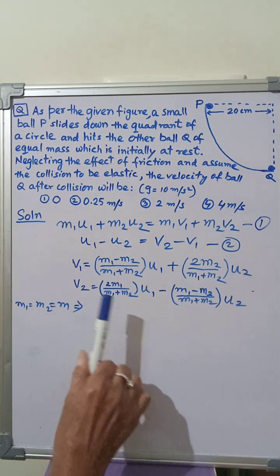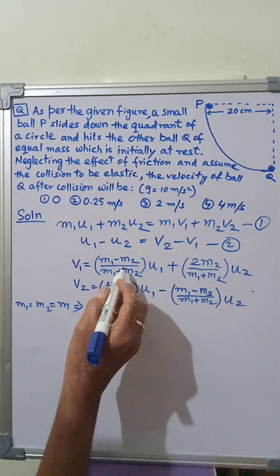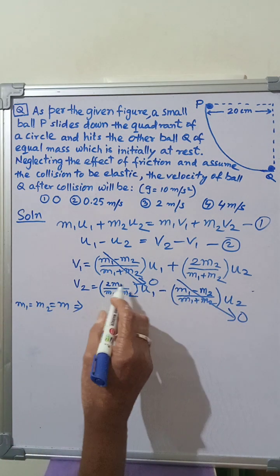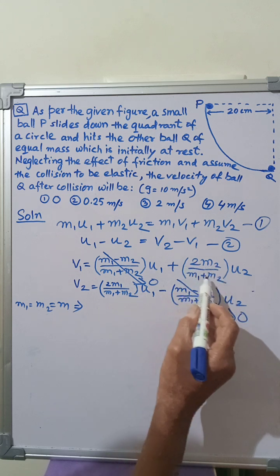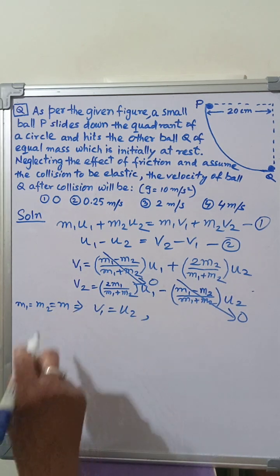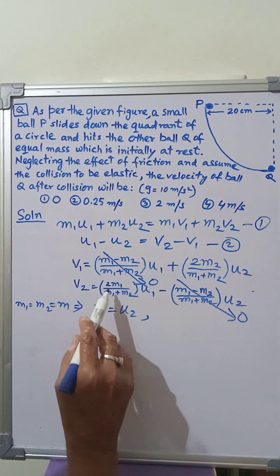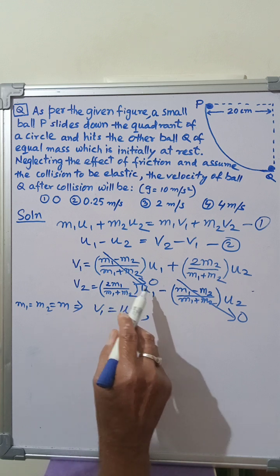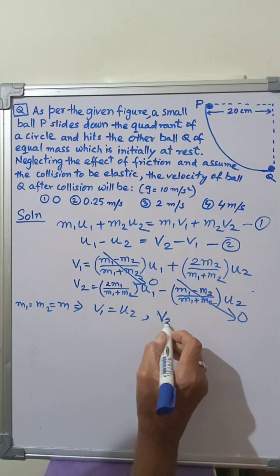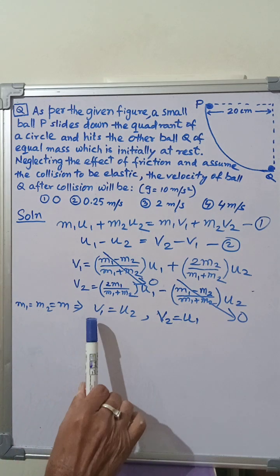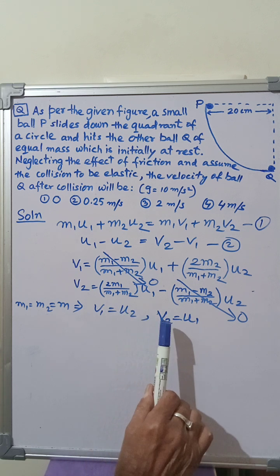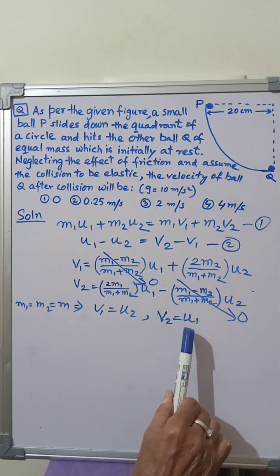For equal masses, M1 = M2 = M. So (M1 − M2) becomes 0, making those terms vanish. In the V1 equation, 2M/(M + M) cancels to give V1 = U2. And in the V2 equation, 2M/(2M) gives V2 = U1. This confirms the interchange of velocities: the final velocity of ball 1 equals the initial velocity of ball 2, and vice versa.